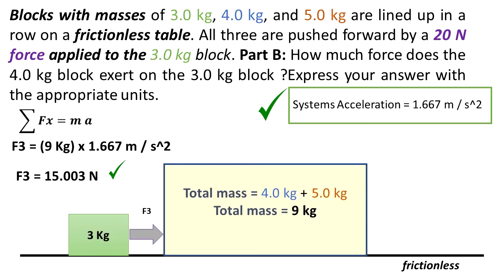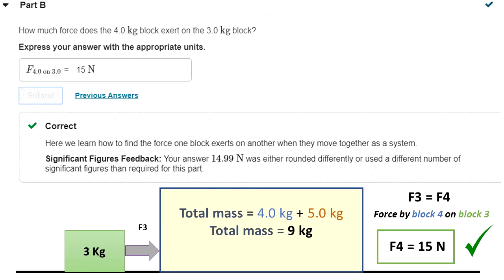That means block 3 needs to push that system with 15 N of force to achieve the system's acceleration. That system has to push back on the 3kg with the same amount of force because of Newton's laws. That's why we can conclude that the magnitude of F3 equals the magnitude of F4. The force by block 4 on block 3 is 15 N as well.